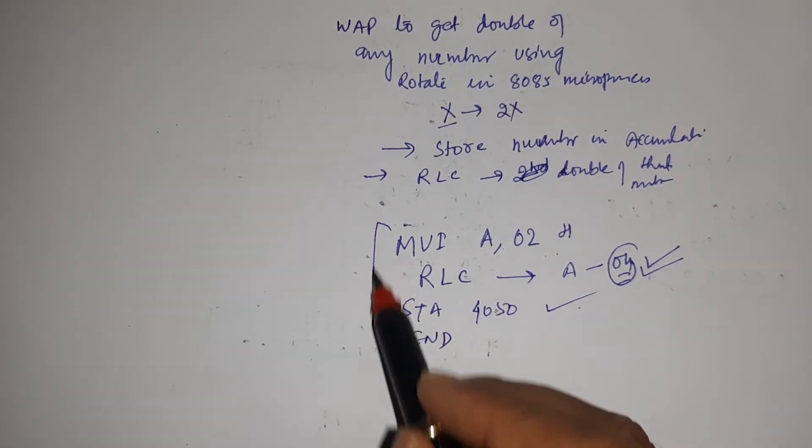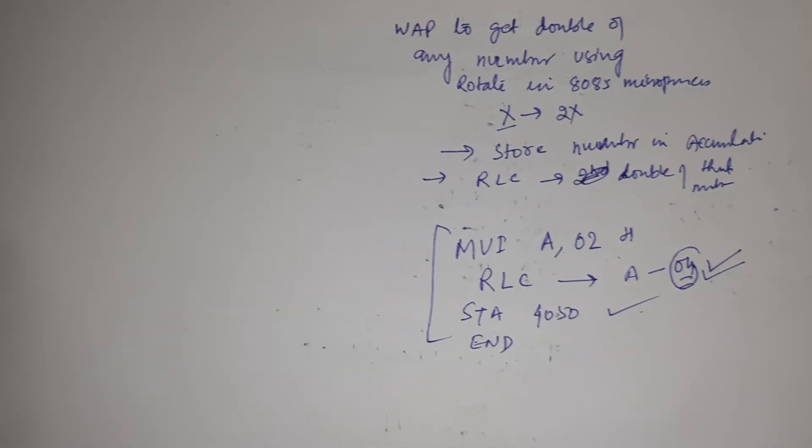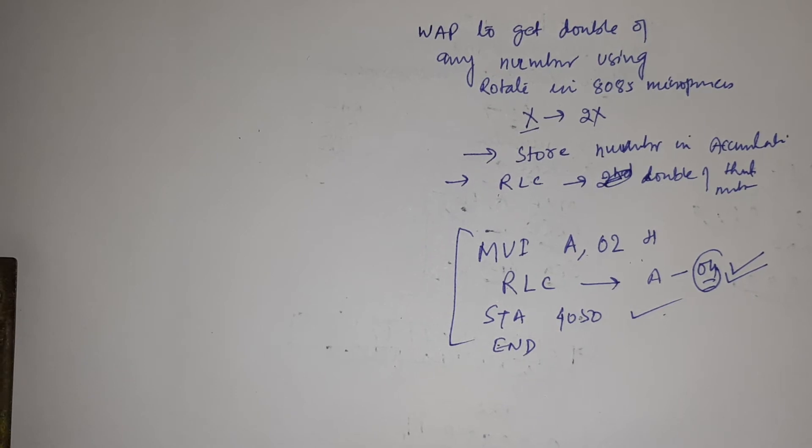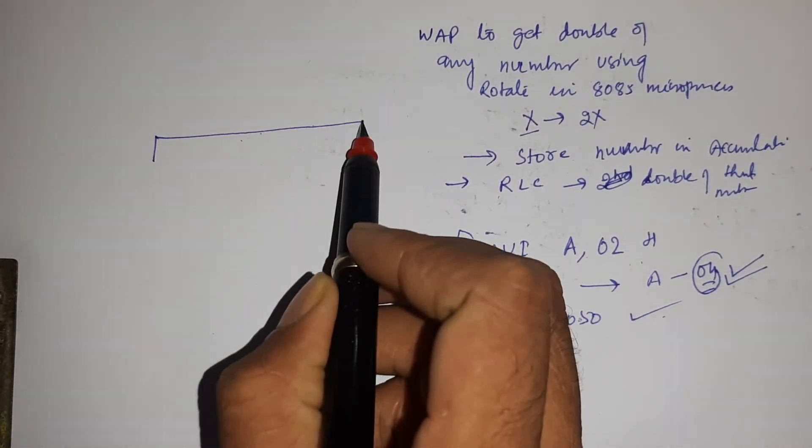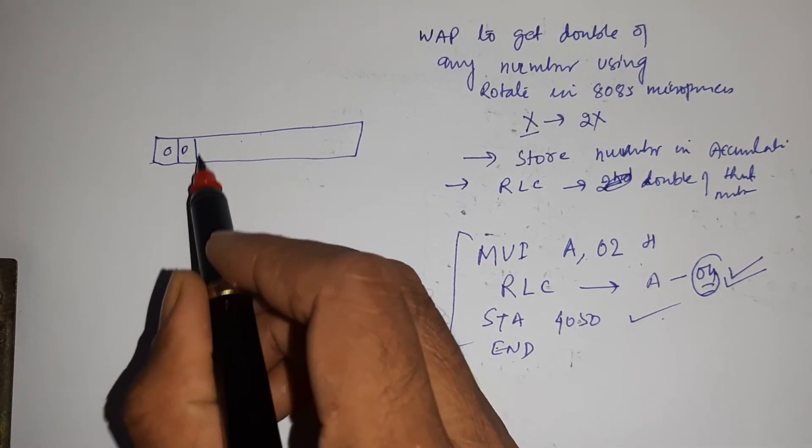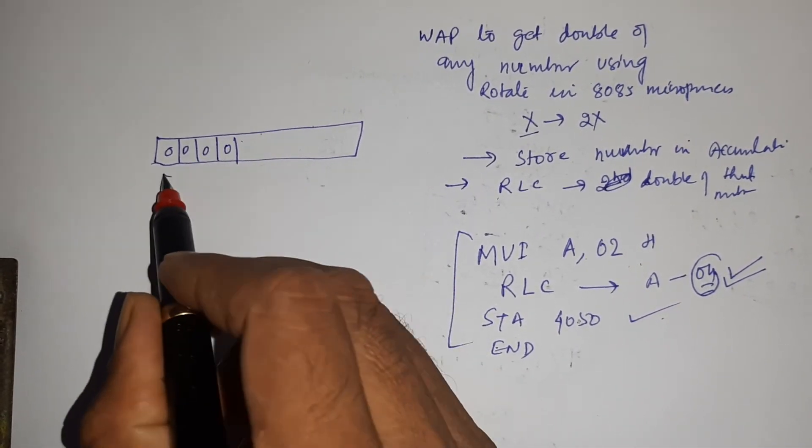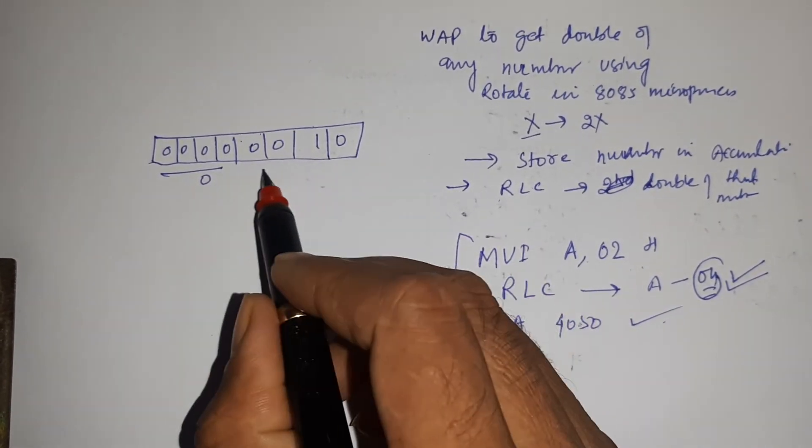This is a simple program to get double of any number. Let's verify if this is working or not. Suppose the content of accumulator is 02 means 00000010, this is 2.